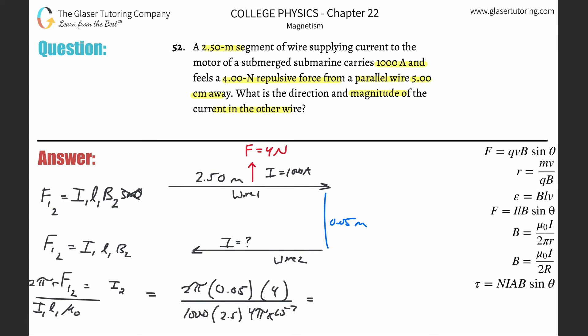All right, so 2π. You can see you might be able to cancel some stuff, but I'm just going to do it all in. 2π times 0.05 times 4 divided now by parenthesis 1000 times 2.5 times 4π times 10 to the minus seventh. Close those parentheses, and we get a value of about 400 amps.